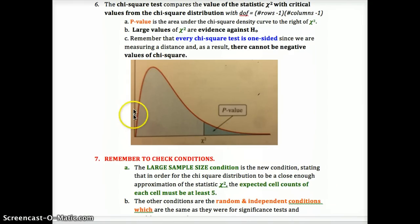Remember, a smaller value, zero, would mean that the values are right where we expect them to be, which would support the null hypothesis. The further we get from zero to the right, the larger chi-square, the stronger the evidence that the two distributions are not the same. The large sample size condition is the one that's different, so keep that in mind.